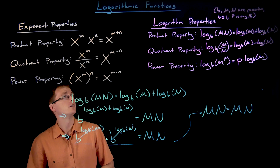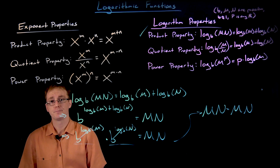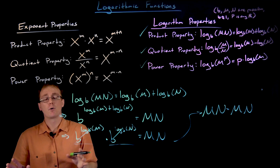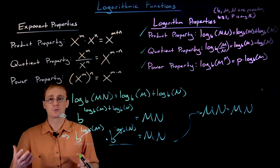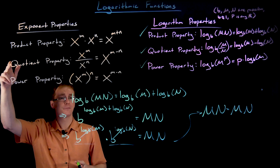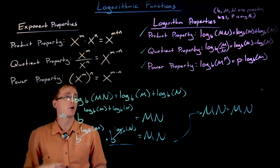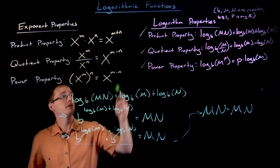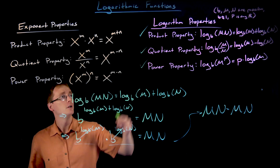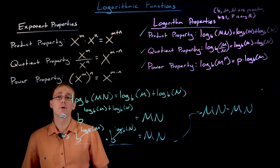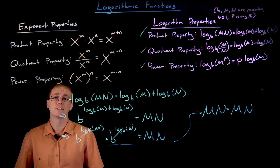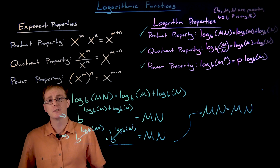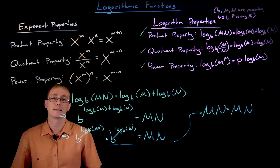That completes our proof of the product property for logarithms. You can run through the exact same steps for the quotient and power properties — at some point after switching from logarithmic to exponential form, you'll use the quotient or power property for exponents and finish from there. We should now be convinced that the product property is true, and the same line of argument proves the quotient and power properties. With these properties at our disposal, we can use them to solve equations or manipulate exponential and logarithmic expressions.